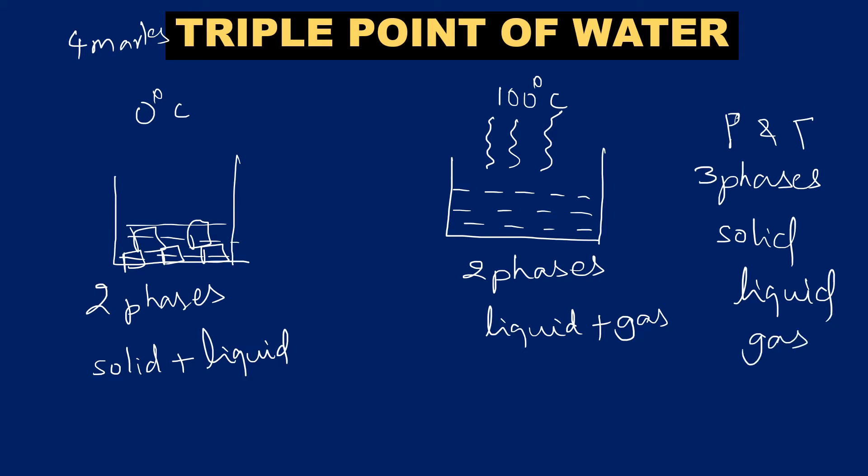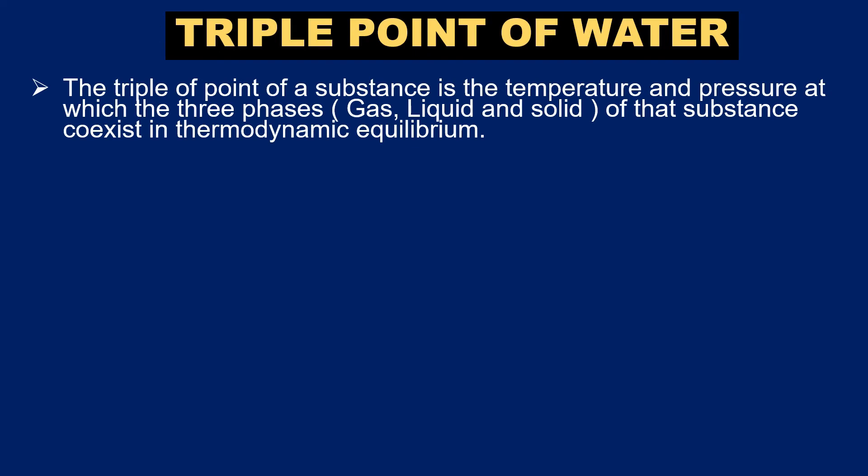At a particular pressure and temperature, we can see water in three phases. What three phases? Three phases are solid, liquid, and gas. In particular pressure and temperature, the water exists in three types: solid form is ice cubes, liquid form is liquid, and gas form is vapor.